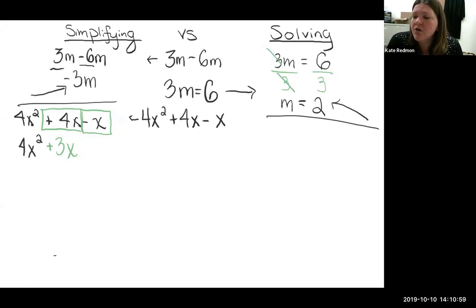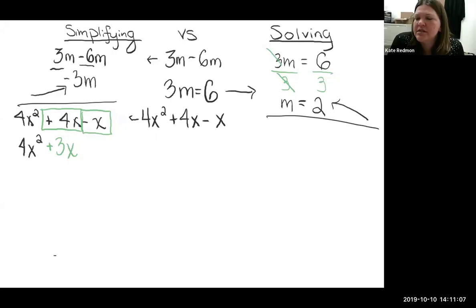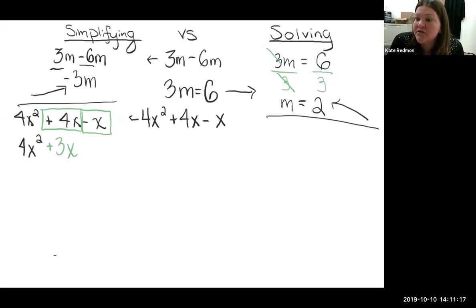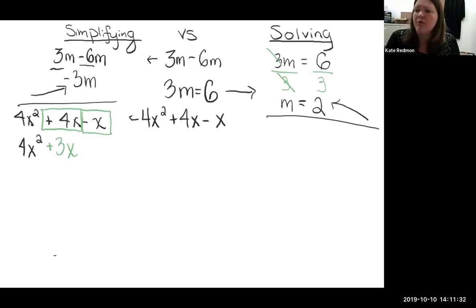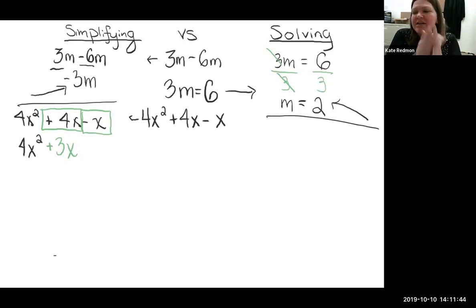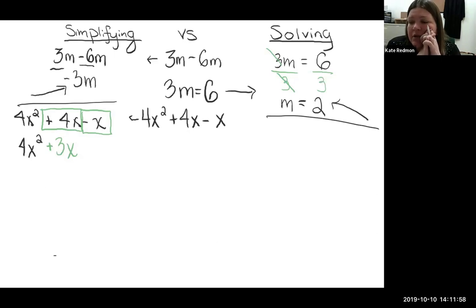This is why simplifying algebraic expressions stresses students out — you look at four X squared plus three X and think there must be more to do. There isn't. I've done all the operations I can obey. You can't combine unlike terms. There's no way to find X because this is a single solitary expression with nothing on the other side to compare it to. I'm just done. Knowing when to stop is the difference between my A students and my B students. My A students know when to stop.